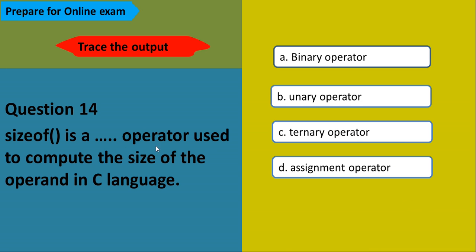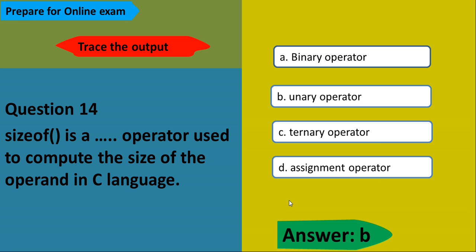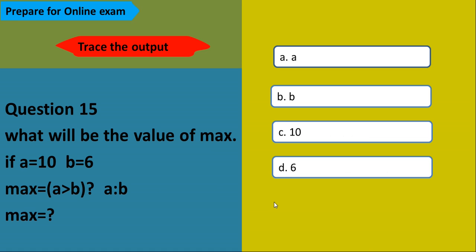sizeof is a operator used to compute the size of a variable in C. The options are binary operator, unary operator, ternary operator, and assignment operator. The answer is B — unary operator. It looks like a function but it is actually an operator, used as a unary operator.